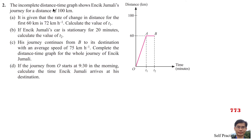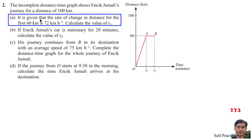The incomplete Distance-Time Graph shows Jumali's journey for a distance of 100 km. Part A: It is given that the rate of change in distance for the first 60 km is 72 km per hour. Calculate the value of T1.